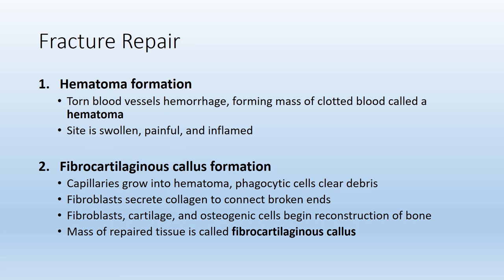Step two is the development of a fibrocartilaginous callus. Into the hematoma, tiny blood vessels known as capillaries allow for the transport of phagocytes, fibroblasts, and bone cells into the area of the fracture. Fibroblasts — immature connective tissue cells that secrete collagen — work to bridge or connect the broken ends of the bone. We also have cartilage and osteogenic stem cells there to contribute to the reconstruction of bone.